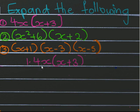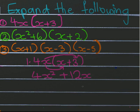Let's get started with the simplest one. All you have to do is take whatever's outside the bracket and multiply it with each of the terms inside the bracket. So take 4x and multiply it with x, and you get 4x squared. Then take 4x and multiply it with 3, and the answer is 12x — don't forget there's an x with the 4. That's your first expanding problem solved.